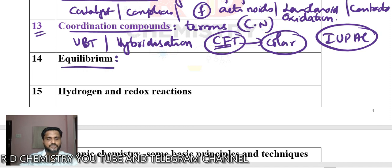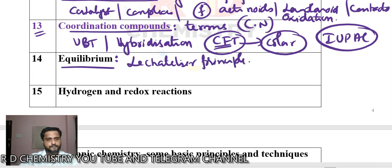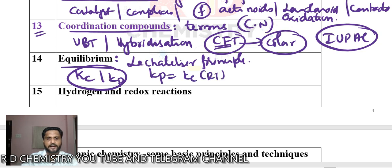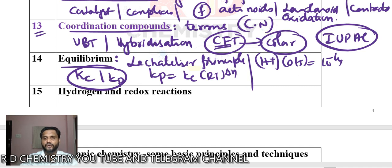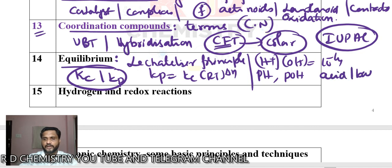Under equilibrium, study Le Chatelier's principle — very important. Study the equilibrium constants Kc and Kp and how they are related: Kp = Kc(RT)^ΔN. Learn how to calculate H⁺ concentration; remember H⁺ × OH⁻ = 10⁻¹⁴. How to calculate pH and pOH. Also study acid-base theories, conjugate acid and conjugate base concepts.